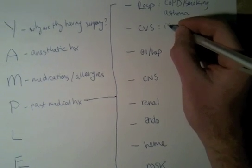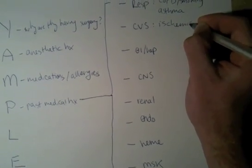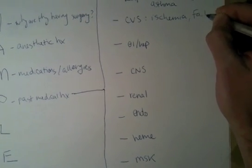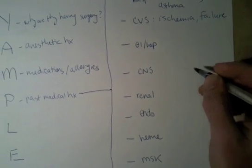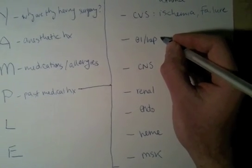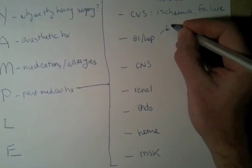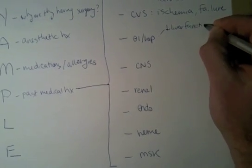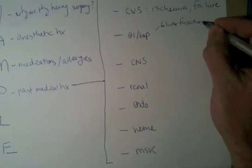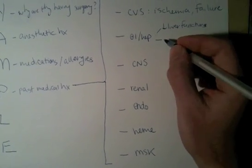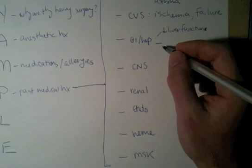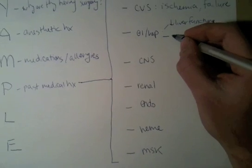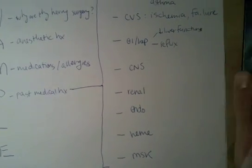For the cardiovascular system, you obviously want to know about ischemia or any ischemic symptoms or failure symptoms. For the GI system and the liver, you want to know about any decrease in liver function, because the liver is very important in metabolizing a lot of the drugs that we as anesthetists give. And in terms of aspiration risk, you want to ask about reflux symptoms as well.